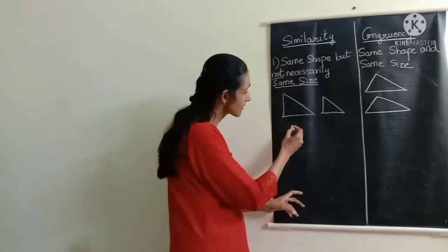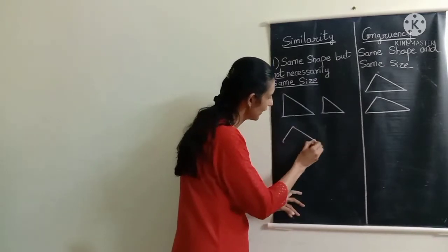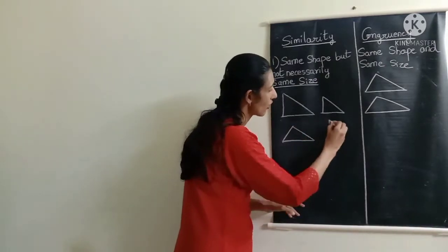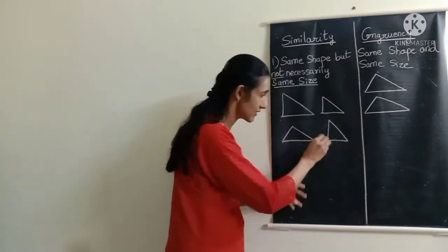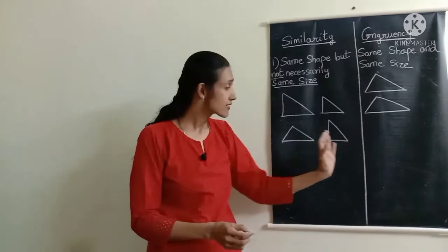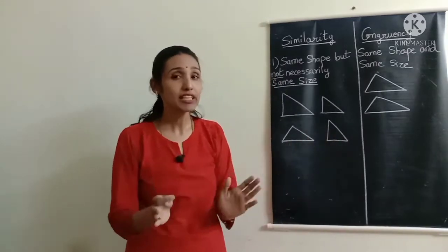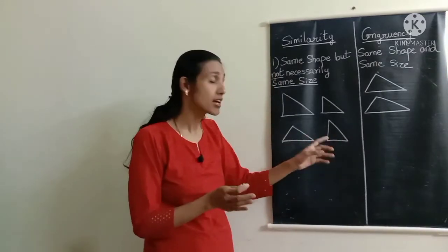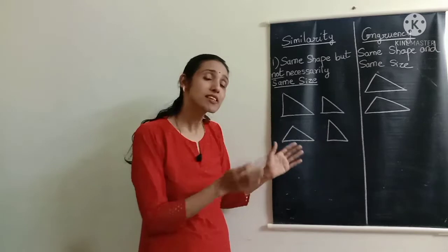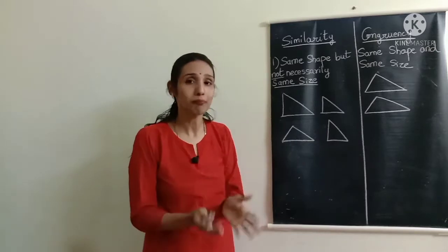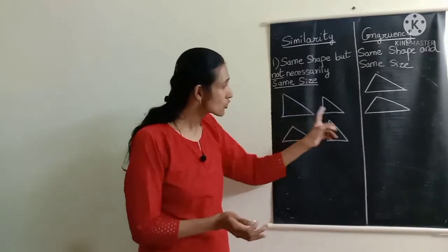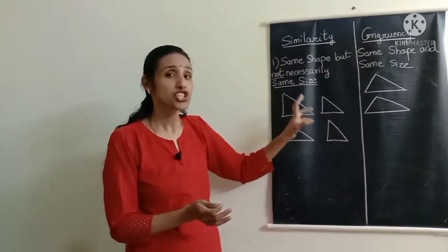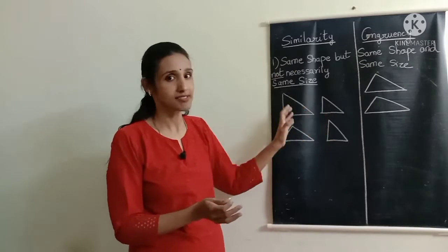Now if I draw two triangles whose shapes don't match, those two triangles are definitely not similar. So two triangles are similar only when their shapes are the same.